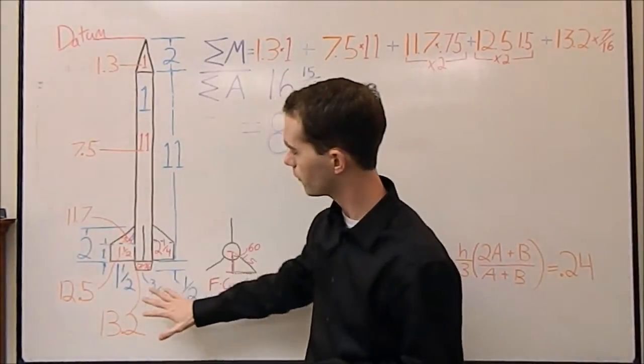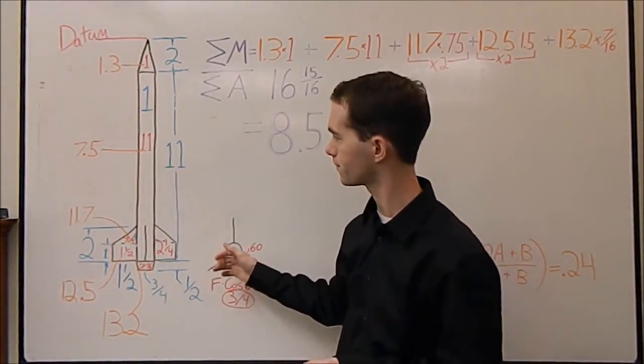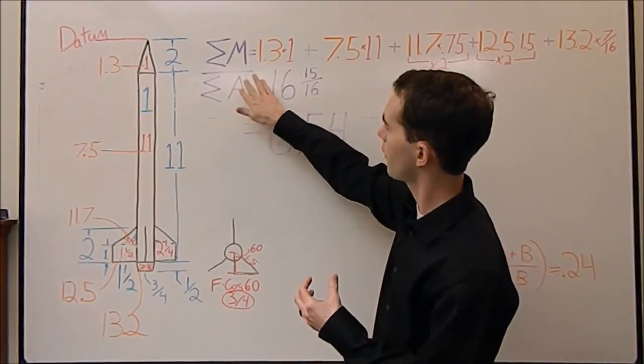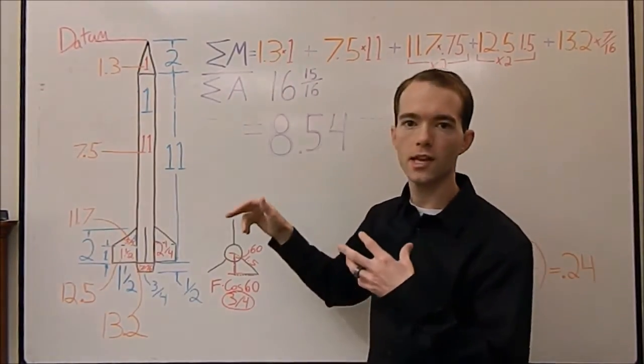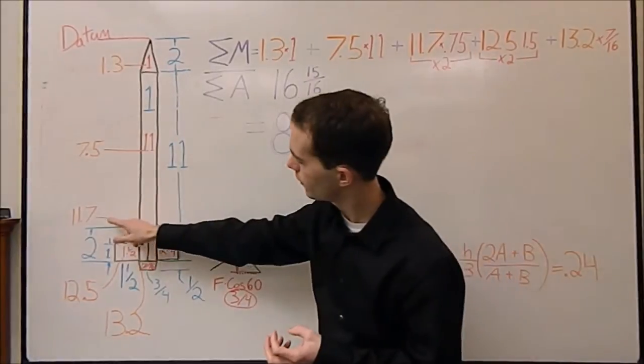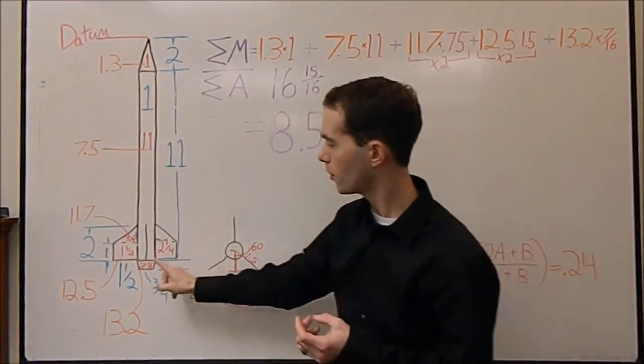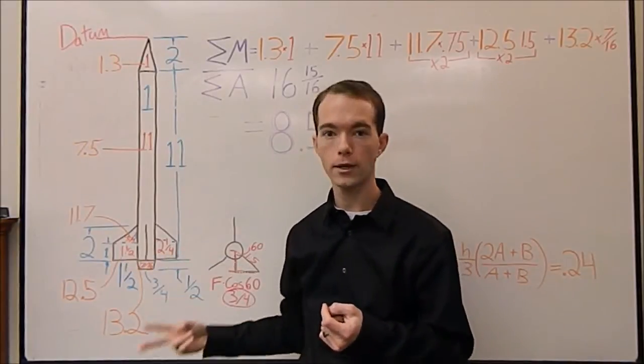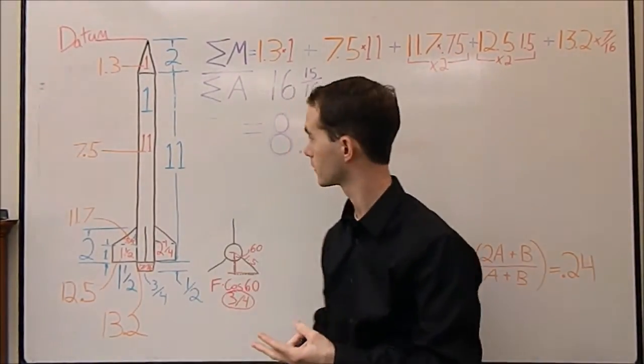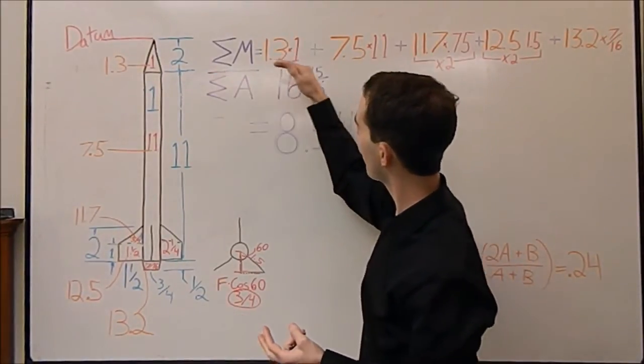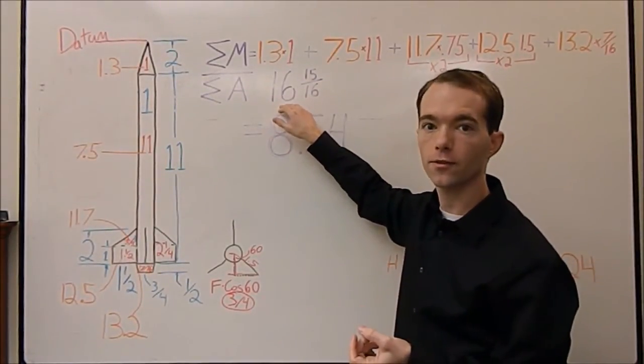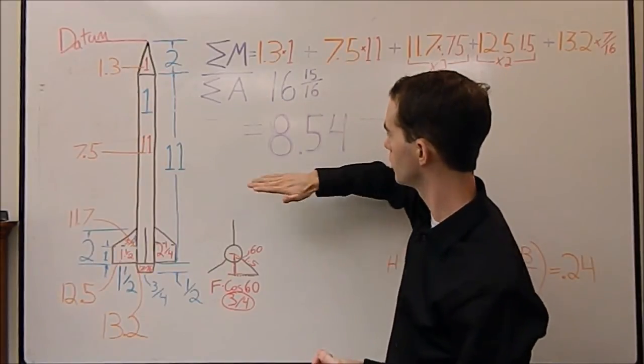So, we have all of our areas and all of our centroid distances, which is what we need to calculate this. Instead of forces, we're using areas. So, but it all makes sense. So, sum of the moments over the sum of the areas in our case. Moments, we're just taking, instead of a force, we're just taking an area. So, 1.3 times 1, 7.5 times 11, 11.7, 3/4. You get all this. Now, one thing to note here is you have to multiply each fin by 2, which is what I did here. You've got the triangle portion and the rectangular portion times 2, because we have 2 of them. So, we do all that, we add all those up, and then we divide that by the total area of our figure here, which ends up being 16 and 15/16ths square inches.